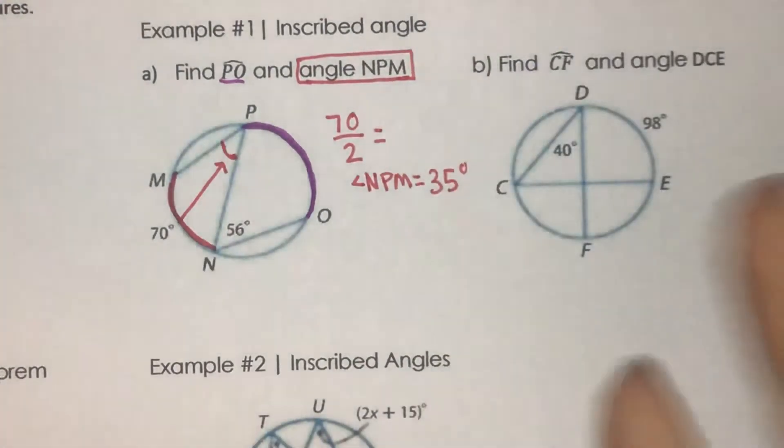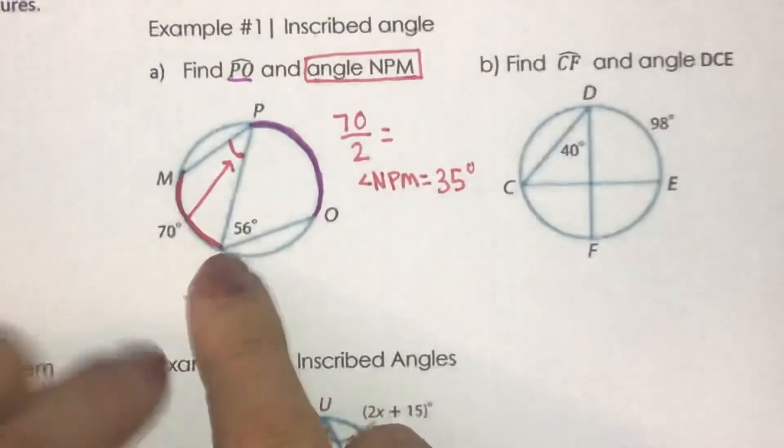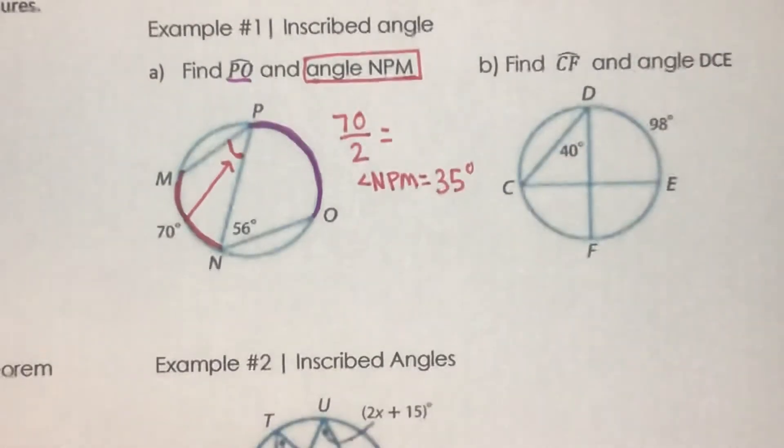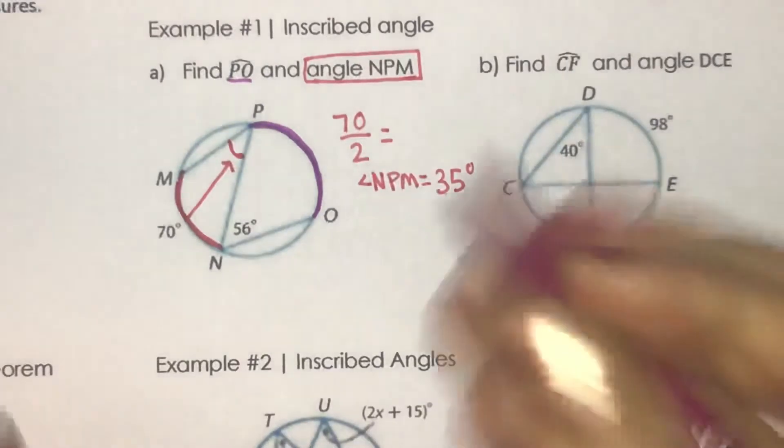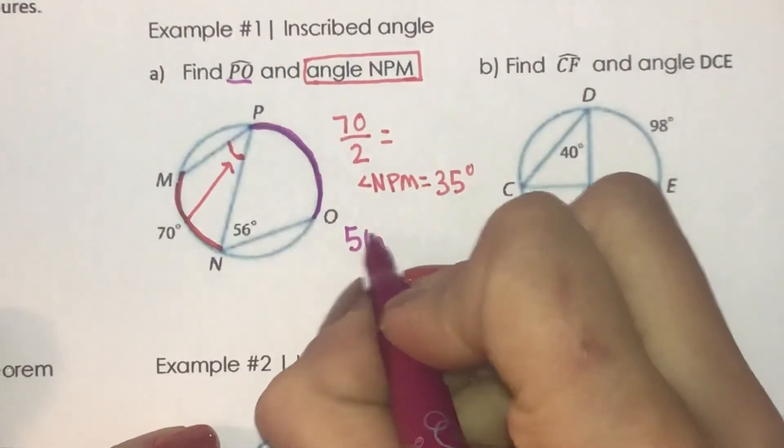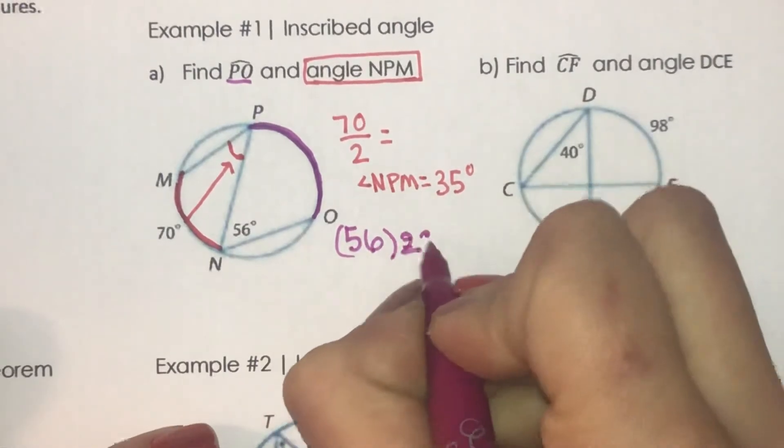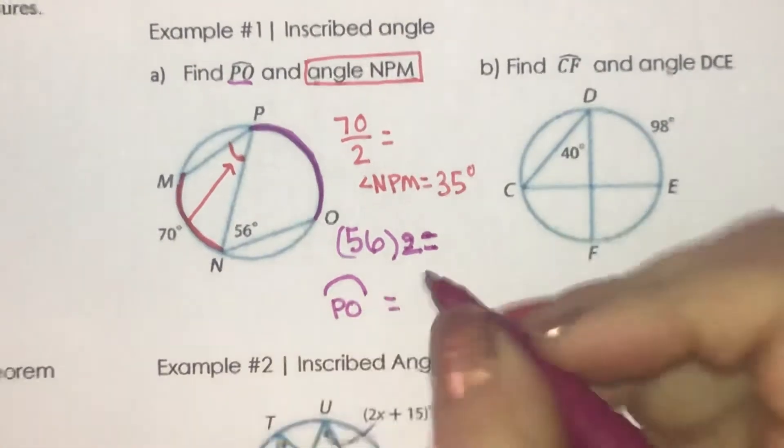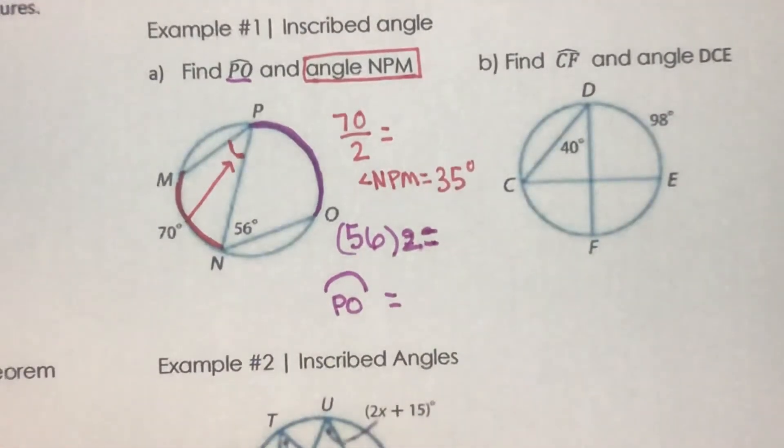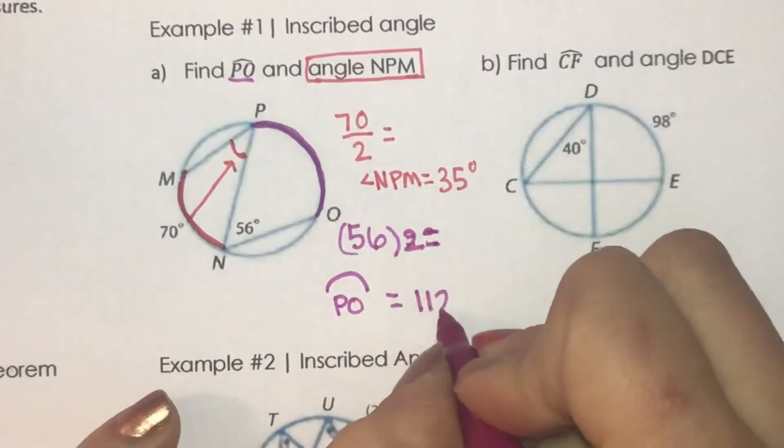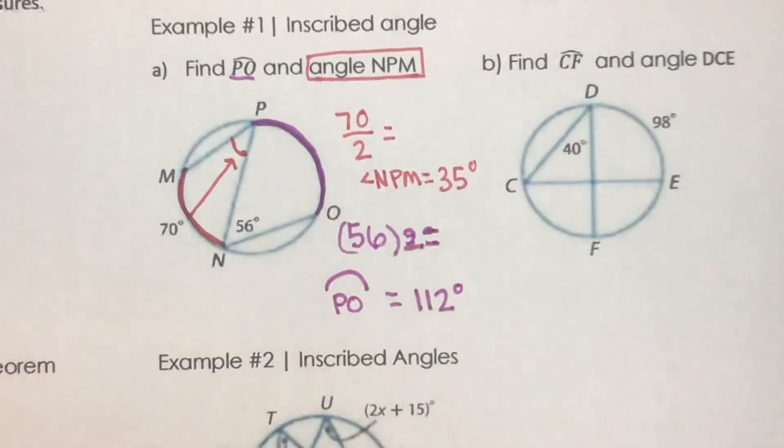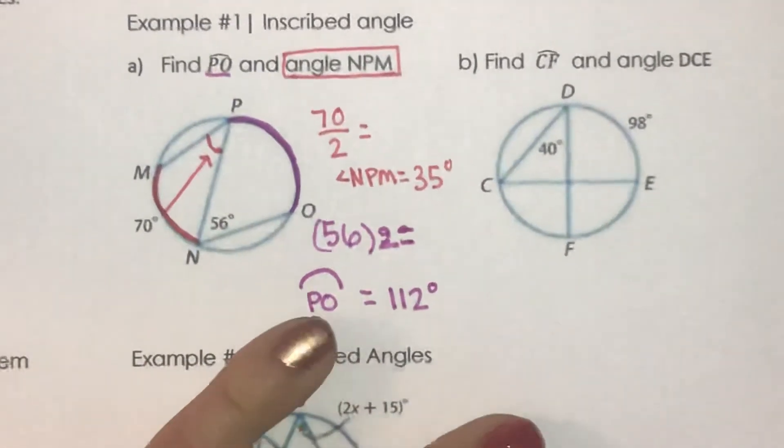To go the other way, instead of dividing by 2, you're going to multiply by 2 if it gives you the angle here. So it's going to be 56 times 2. And that will give me arc PO. Okay, so you're either multiplying by 2 or dividing by 2 to get to your arc or angle measure.